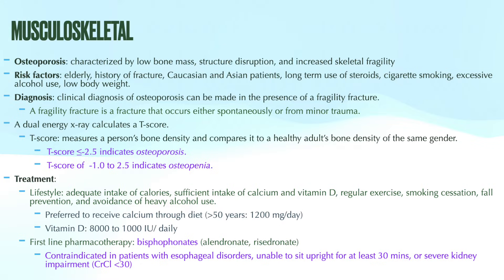There's a really easy-to-use tool called the Fracture Risk Assessment Tool, also referred to as FRAX (F-R-A-X), which calculates your patient's risk for a fracture in the next 10 years. Risk factors it evaluates include advanced age, history of fracture, glucocorticoid therapy, parental history of hip fracture, low body weight, current cigarette smoking, excessive alcohol consumption, and rheumatoid arthritis.